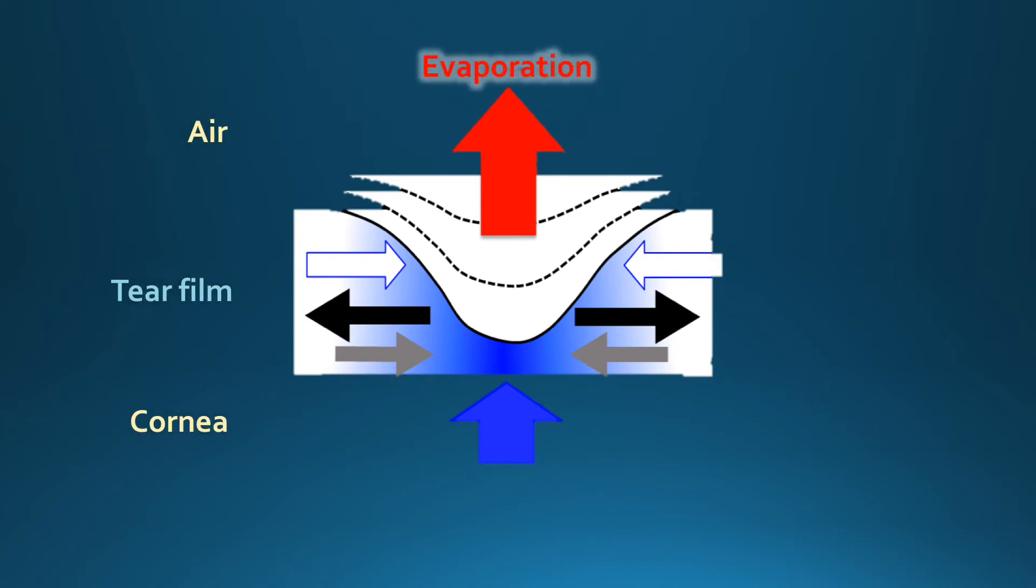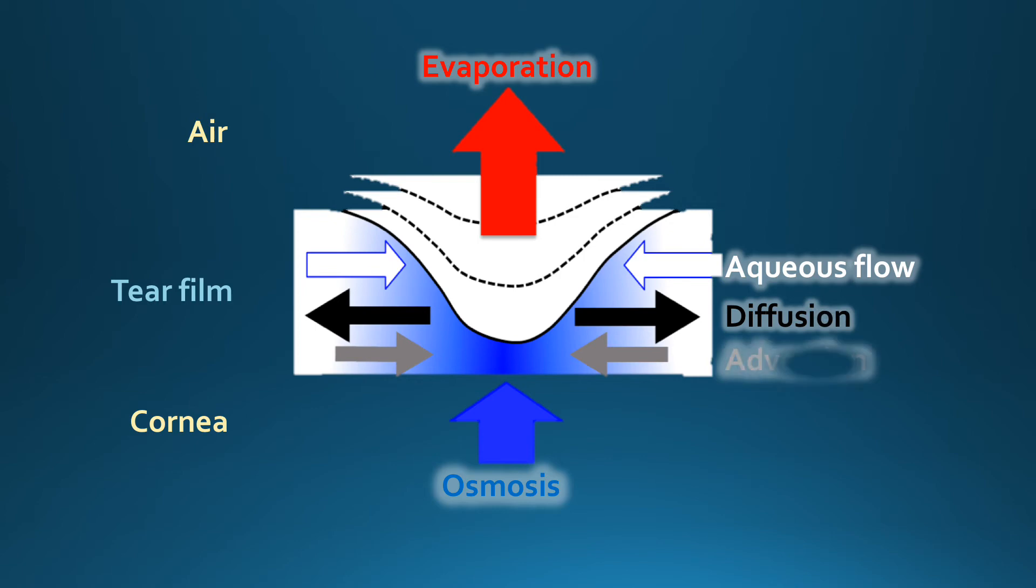Water is lost to the air by evaporation, which can create dry spots. Aqueous flow attempts to fill in the forming spot, and osmosis adds tear fluid from the cornea. Salt and fluorescein ions are moved around the tear film by diffusion and advection.